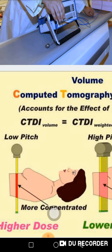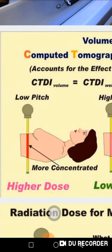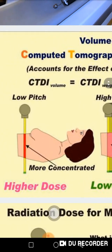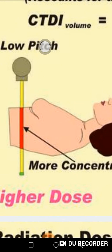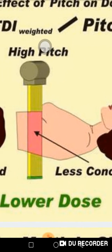If I include the pitch in the equation, I divide the weighted CTDI by the pitch factor, giving me the CTDI volume. The CTDI volume is a very important term you will see on any CT scanner. With low pitch — minimal table movement — the dose is more concentrated and higher. With high pitch, the dose is less concentrated and lower. The pitch factor is very important as it affects patient dose.